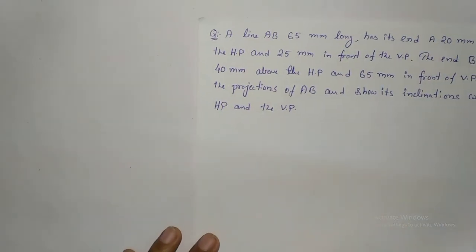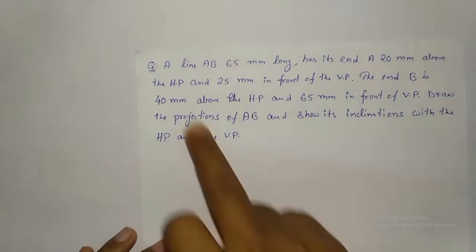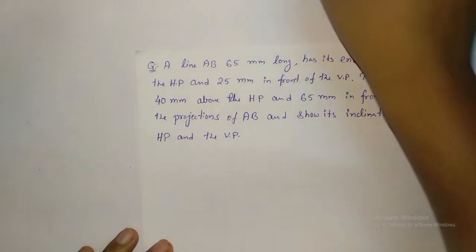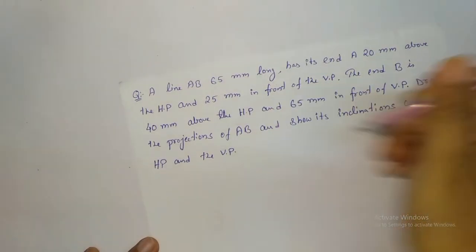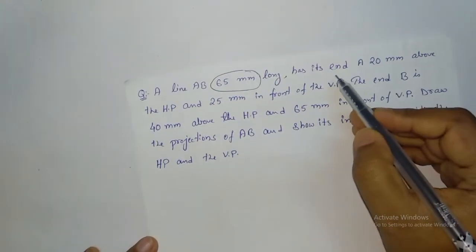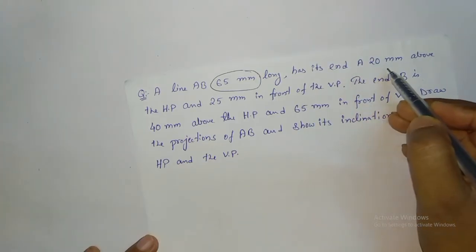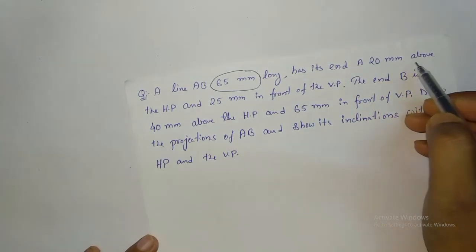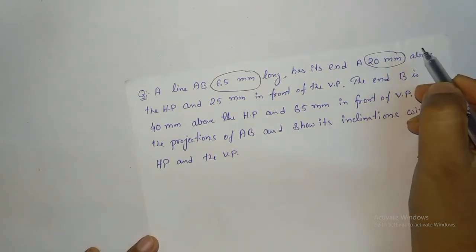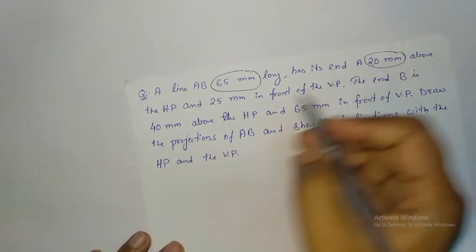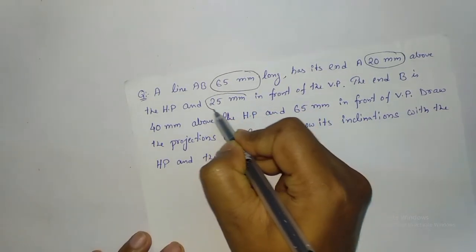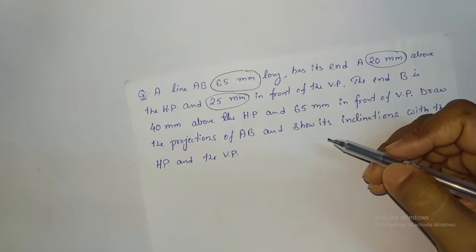So, the next problem is: a line AB, 65 mm long — this is the original length. It has its end A, 20 mm above HP and 25 mm in front of VP. So, 20 mm above HP means above XY, and 25 mm in front of VP means below XY.